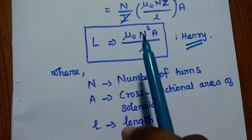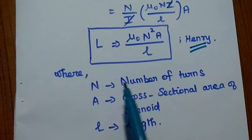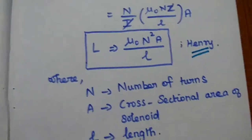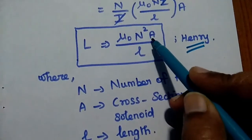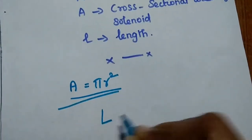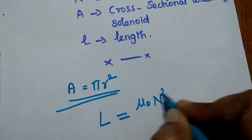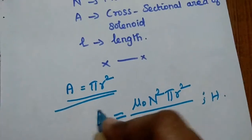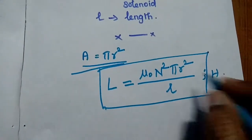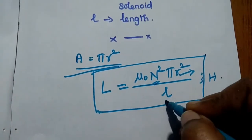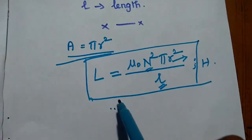We have got the inductance of a solenoid as L equals mu naught N squared A by L, where N is the number of turns, A is the cross-sectional area of the solenoid, and L is the length of the solenoid. If you want to substitute the value of A, we can further simplify: the area of the solenoid is pi into R squared. So we can rewrite the inductance as L equals mu naught N squared pi R squared divided by L, where R is the radius of the coil. By using this formula, we can solve some problems.